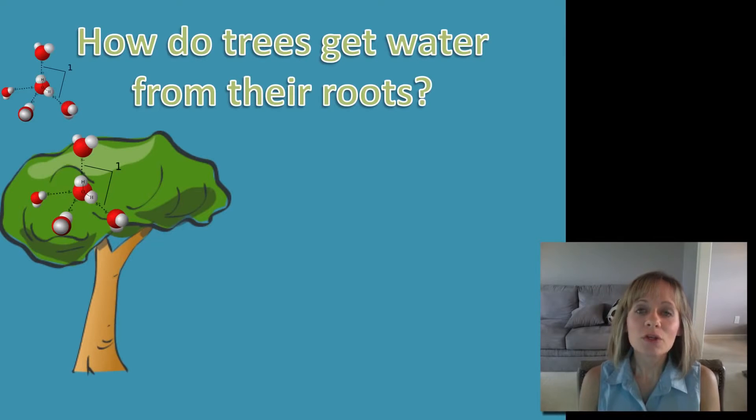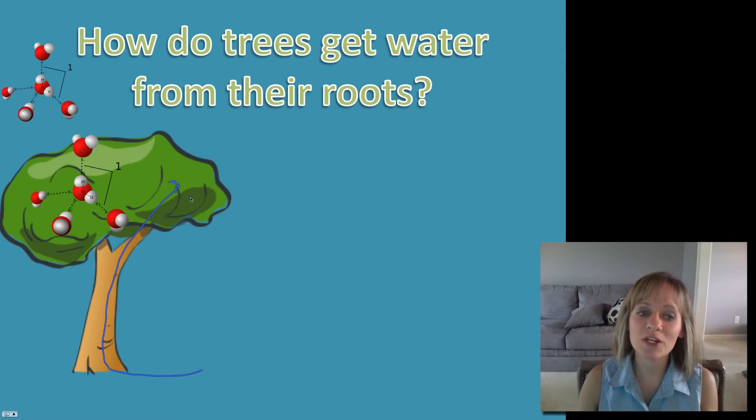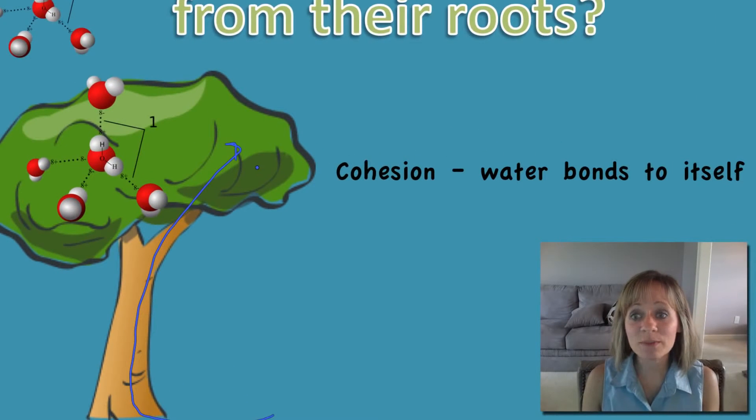The first property: I want you to think about trees. Trees are in the ground and they've got these root systems that pick up water, but their leaves need water as well. What if it's not raining? They need to get water from the roots up to the leaves. How do they do that? It's due to some special properties of water. The first is cohesion—cohesion is simply when water bonds to itself.